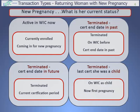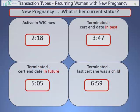The fourth is a woman who shows on TWIST as terminated because she was last on WIC as a child and is now coming in for her first pregnancy. This situation requires special processing to separate her into her own new family before enrolling her for the new pregnancy. We'll show how to process each of these in TWIST. You can watch the whole video or skip ahead to a specific section — the numbers show the time on the video when each section starts.